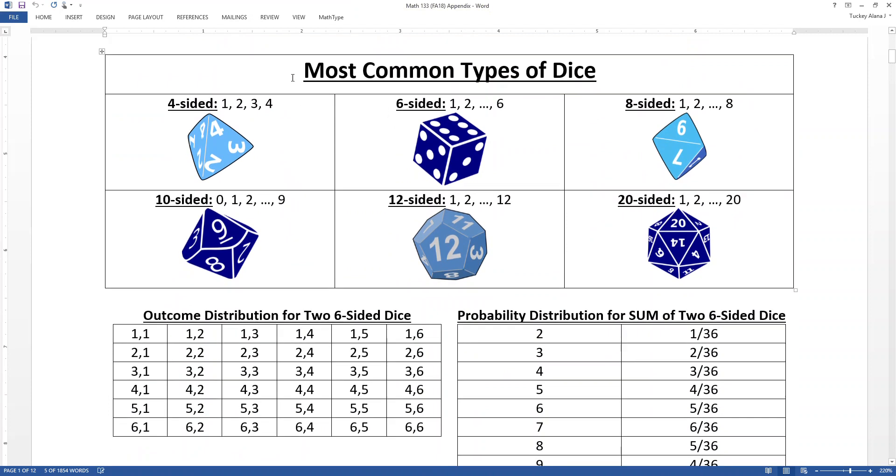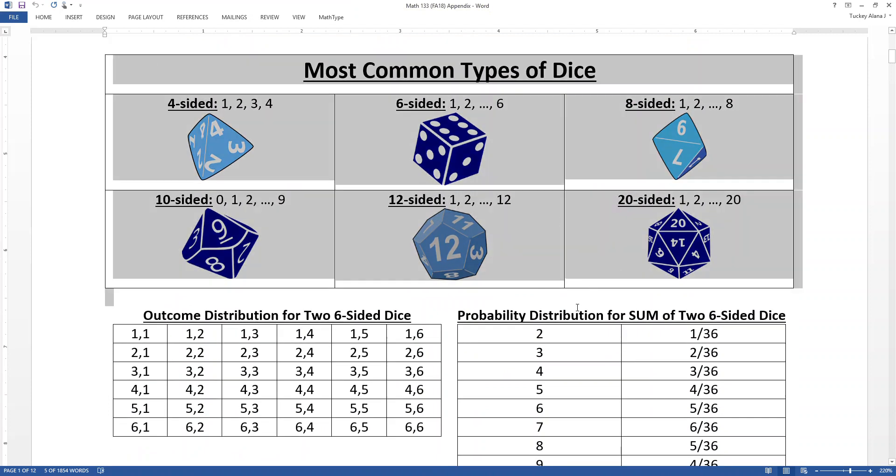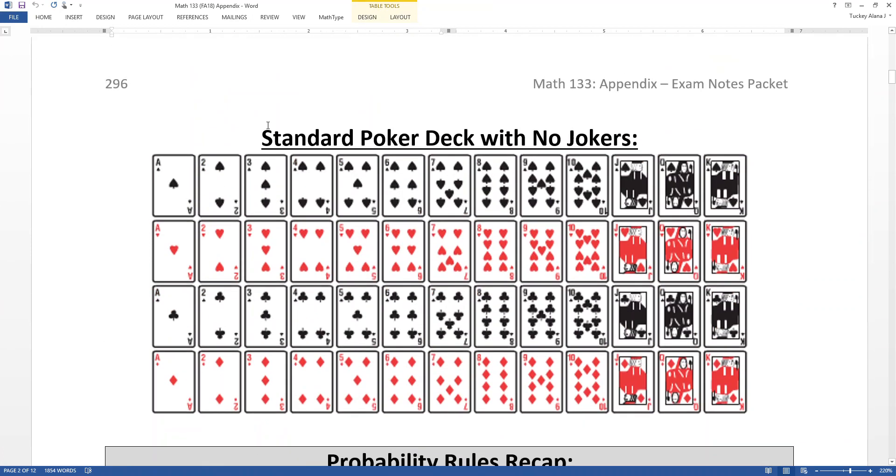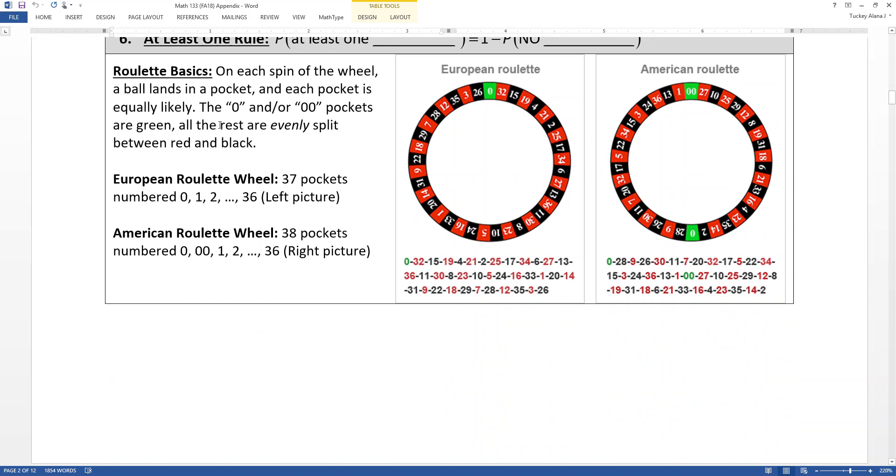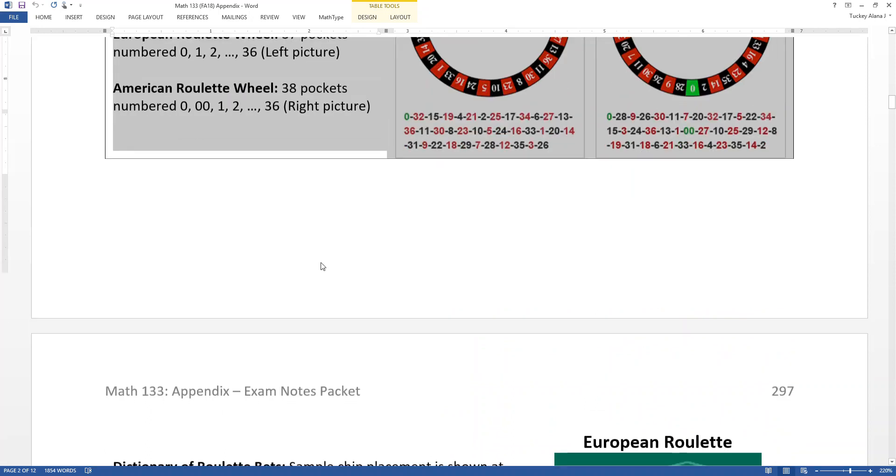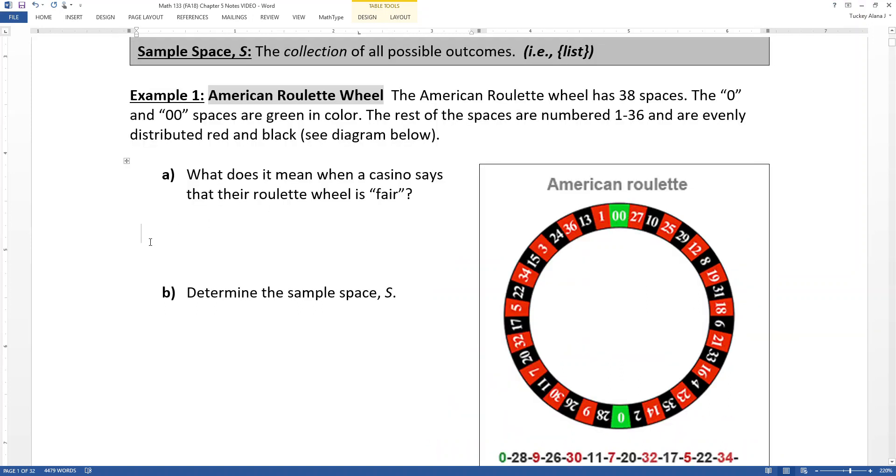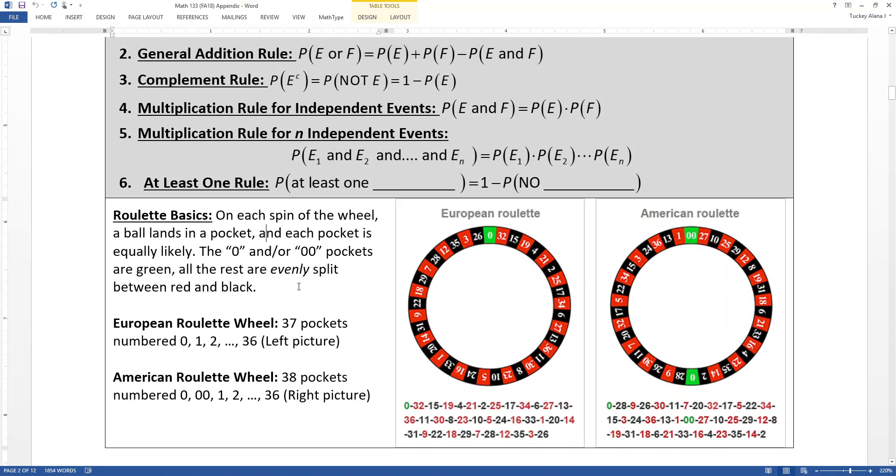Remember that this exam notes packet in your appendix of your course pack will be given to you when you take your exam. And I actually have a bunch of probability information in there. So these are the most common types of dice. We'll talk about that later. We'll come up with this distribution later. The standard poker deck. A lot of people don't play cards. So if you don't, this is what the poker deck looks like. Probability rules. And then there's all the roulette stuff. So there's two pages of roulette stuff. So you don't have to memorize it. You just have to use it. And you'll notice that the 0 spaces, 0 or 00 in American roulette, are green. That's something to keep in mind. So if you're colorblind, make sure that you note it. It's written actually on that notes packet right here. That the 0 spaces are green and all the rest are evenly split between red and black.